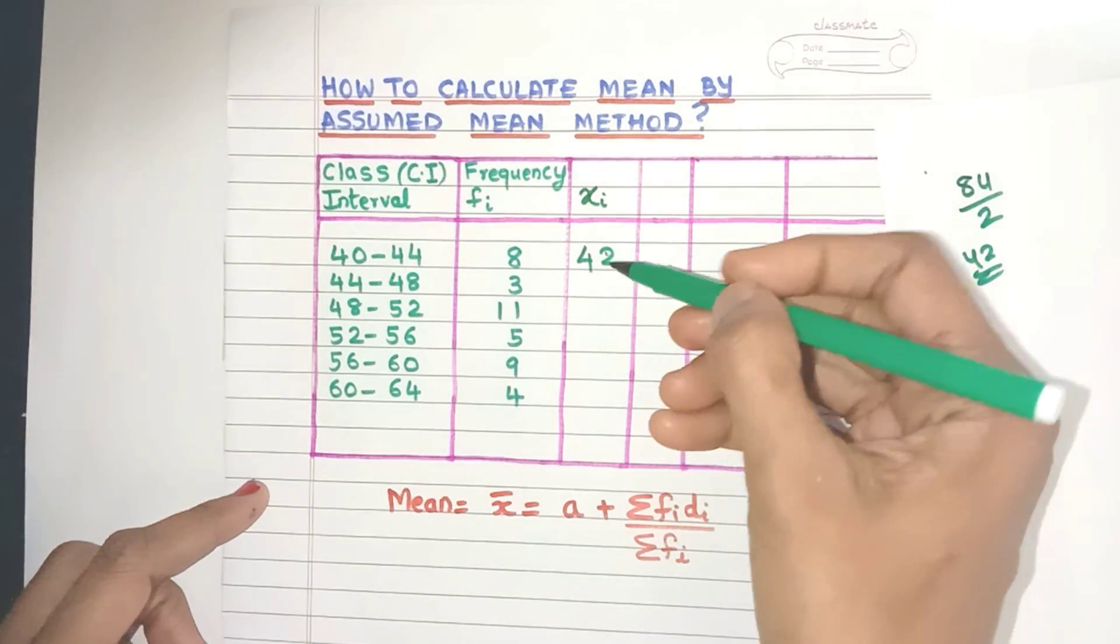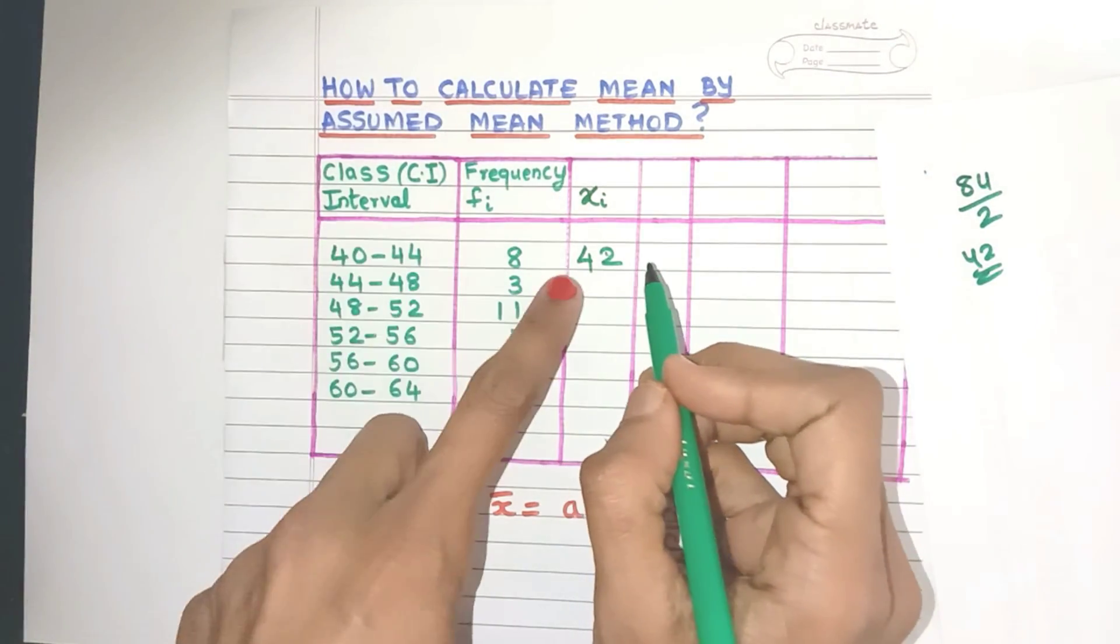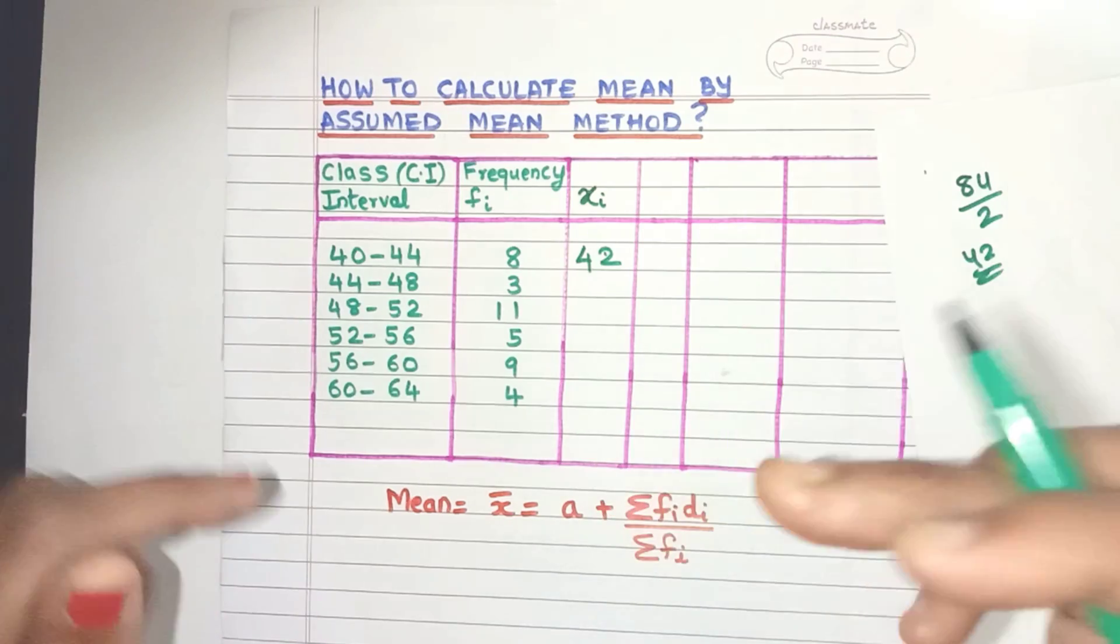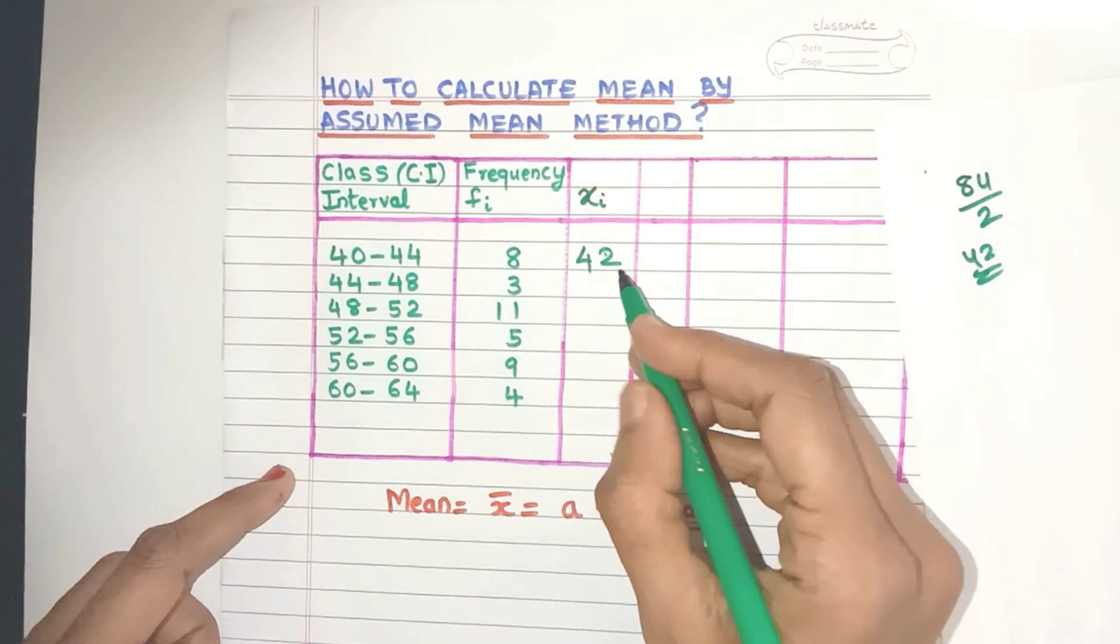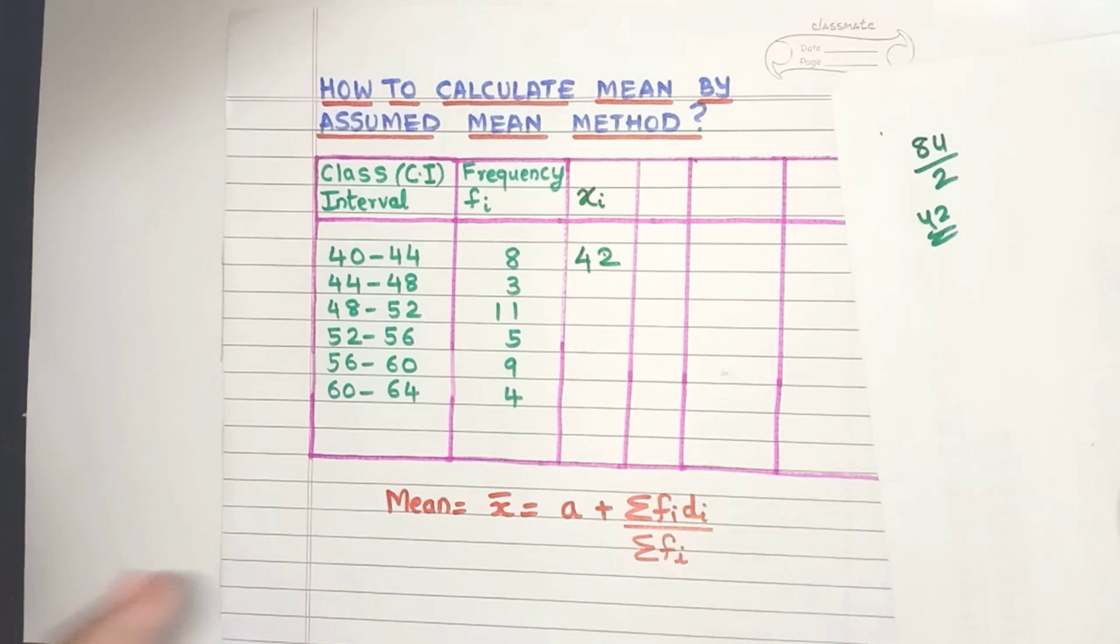Now that way you can find out all the xi values, but there is an easier method. Once you find the first xi value by this method, just add the class size to it and you will get automatically the next xi value. So what is the class size? Let's first find that out.